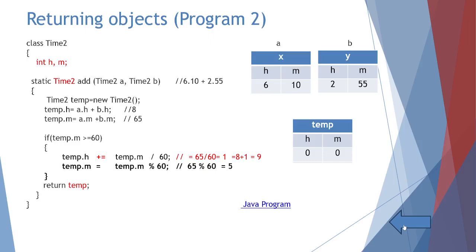In the add method returning Time2, x is known as 'a' and y is known as 'b'. The same calculations are performed: temp.h = a.h + b.h, temp.m = a.m + b.m. If temp.m >= 60, it's corrected. But at the end, instead of printing, we write 'return temp' — it's not a void method.